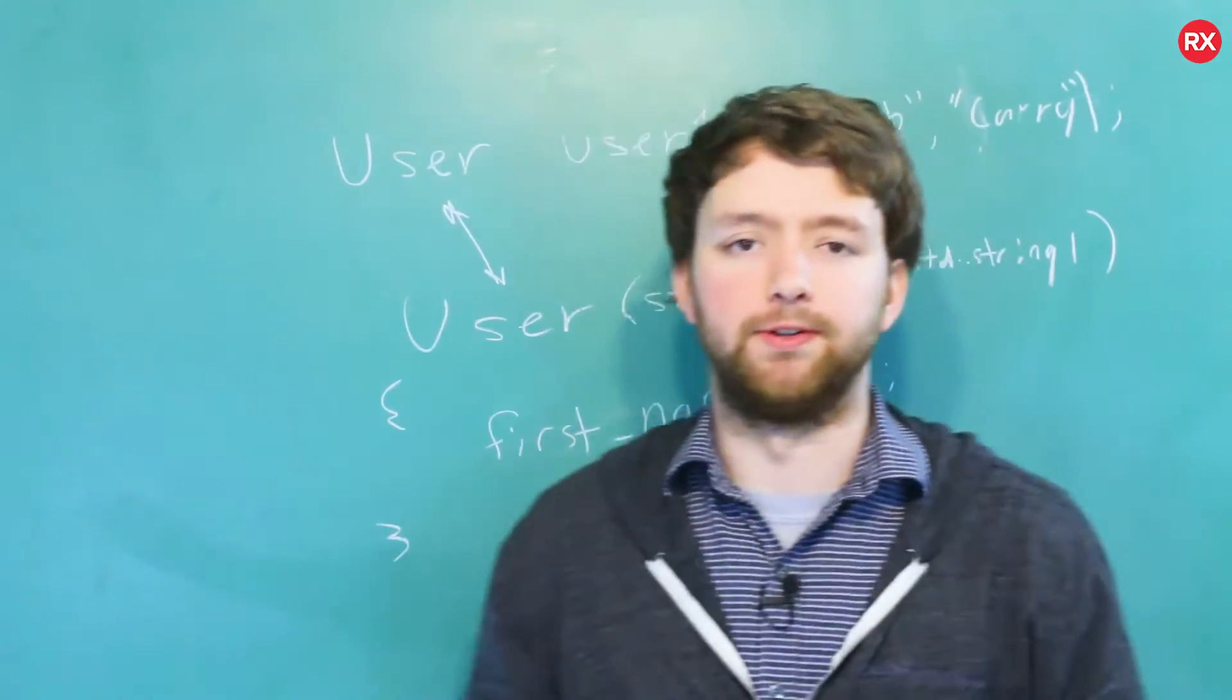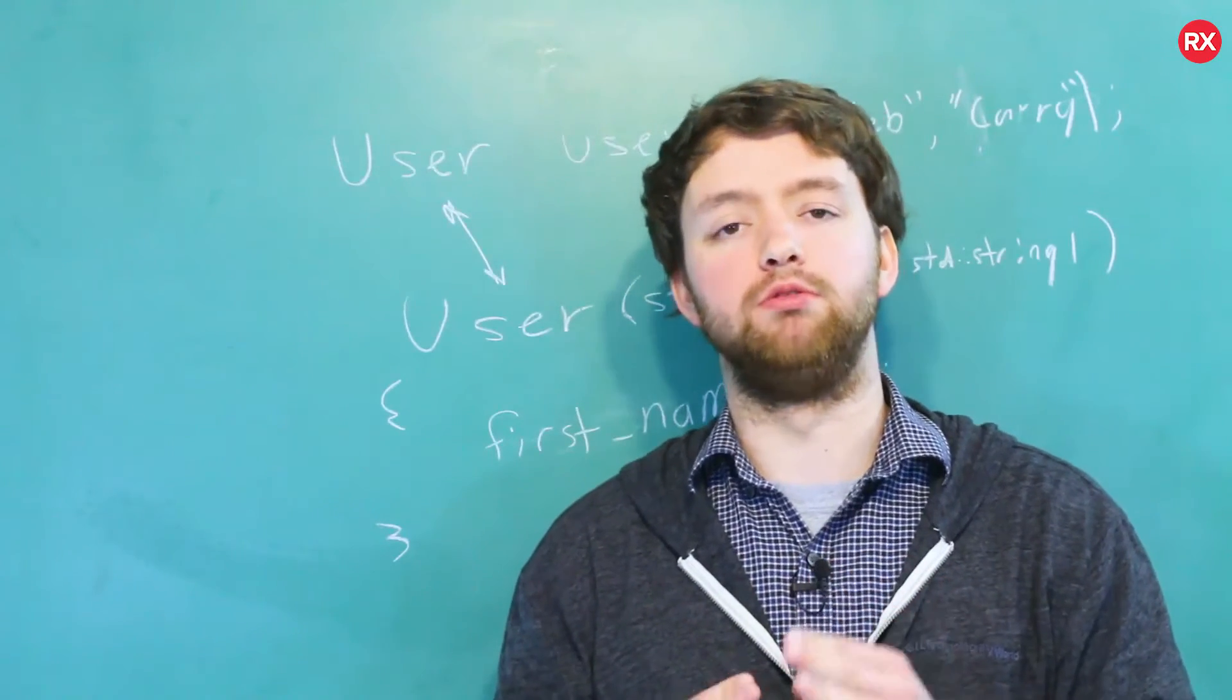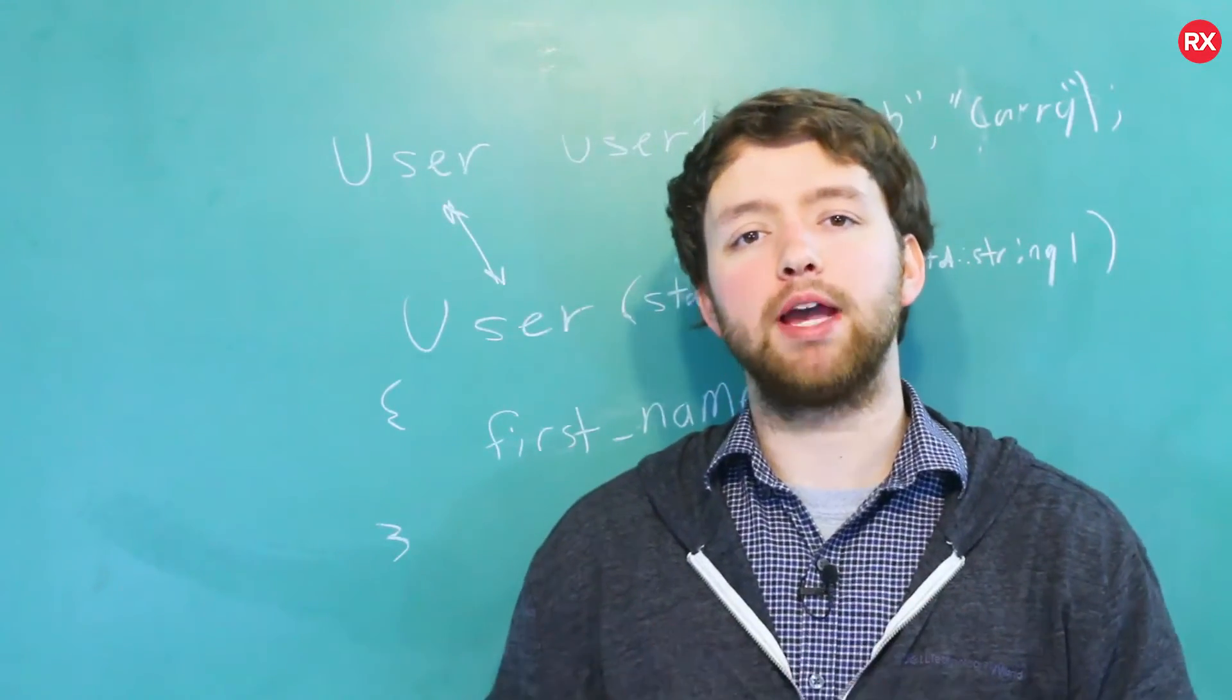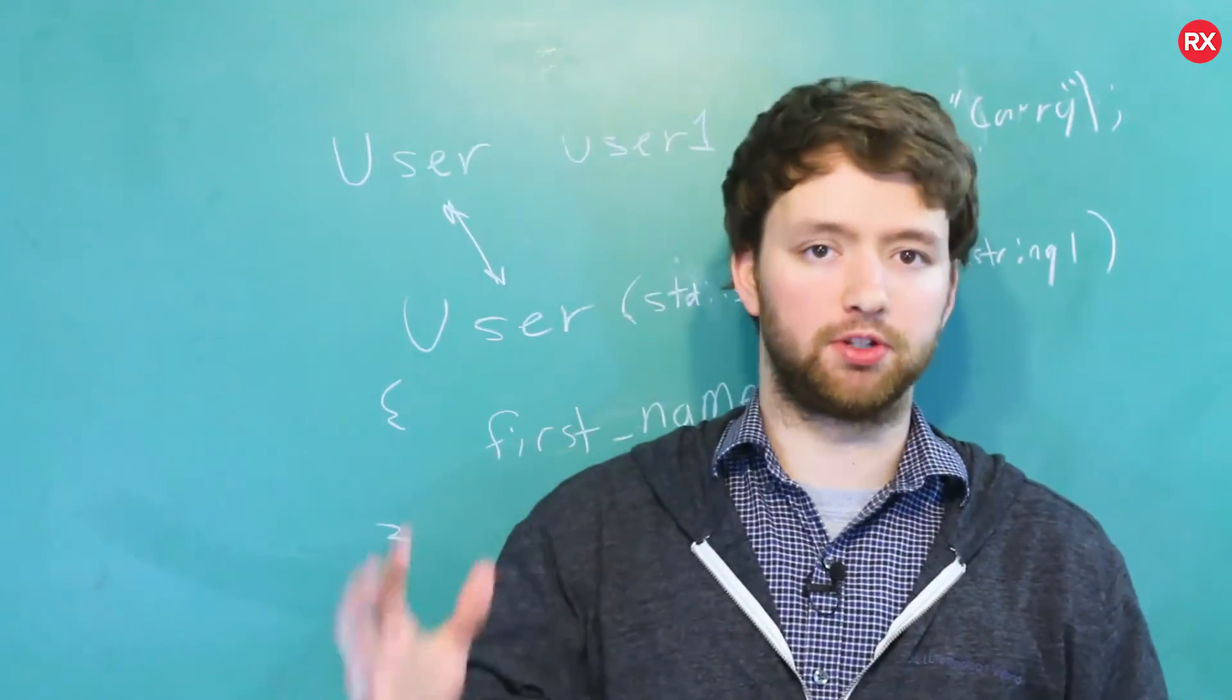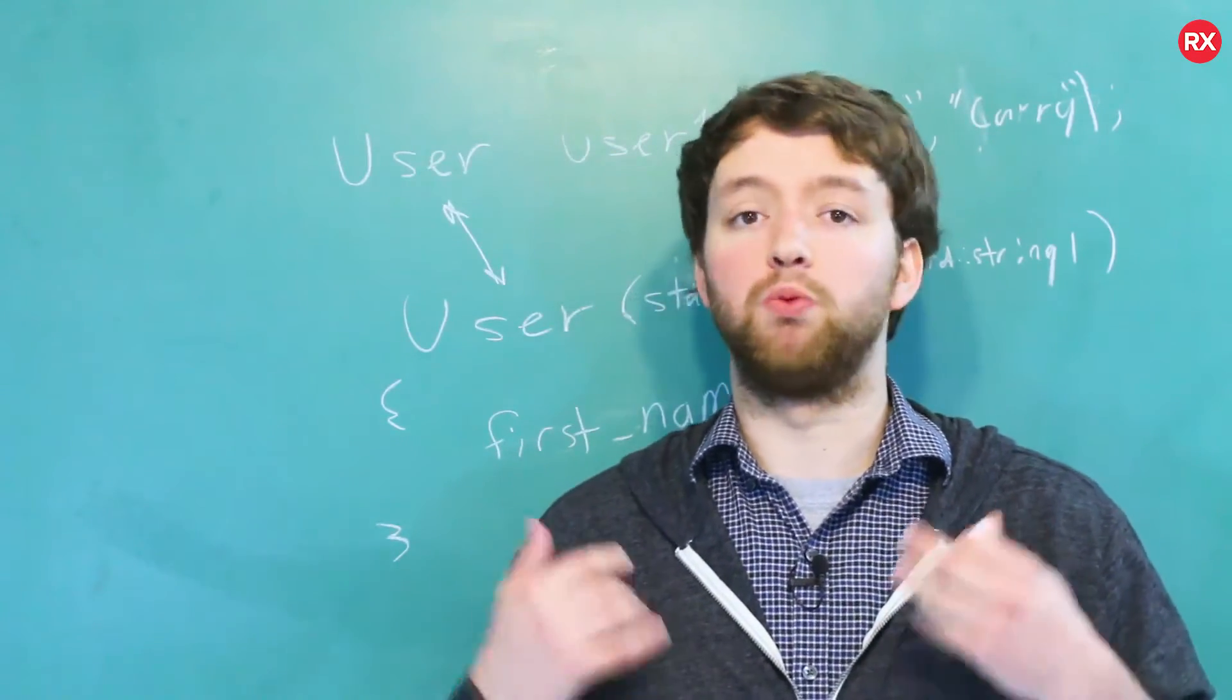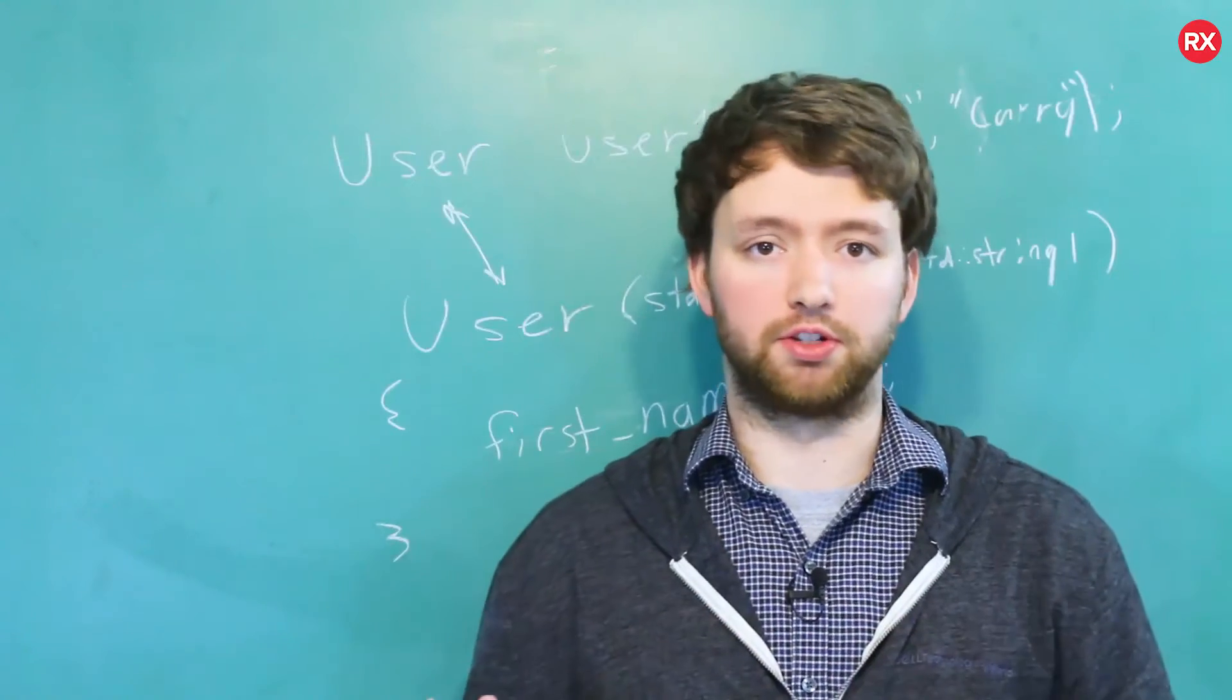Now, here is the thing you need to realize and understand. The implicitly defined default constructor will only happen if we do not define any other constructors ourself. And this is weird, but it makes sense. Because imagine I wanted to create a class where you had to call a custom constructor. Well, if they always created this default constructor implicitly, then there would be no way to enforce that. So, if I want to enforce that, all I have to do is create the custom constructor, and then do not create the default constructor manually.